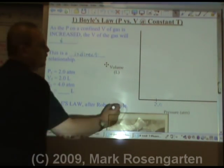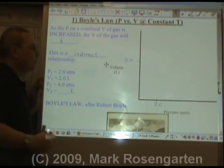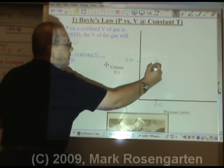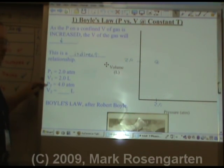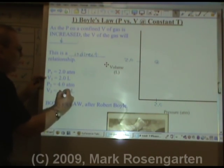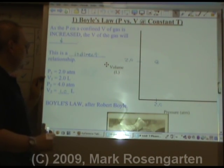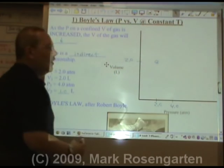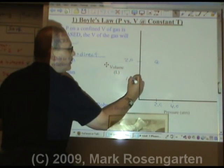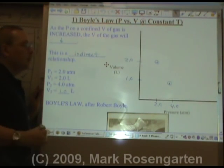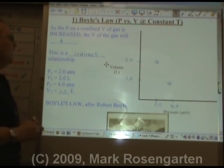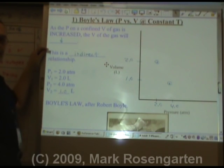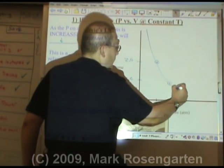If the pressure is two atmospheres and the volume at that two atmospheres is 2.0 liters, if I double the pressure from two atmospheres to four atmospheres, the volume will be cut in half from two liters to 1.0 liters. If you double the pressure the volume will be cut in half. Conversely, if we cut the pressure in half to 1 atmosphere, the volume will double to 4 liters, giving you a nice indirect relationship graph.